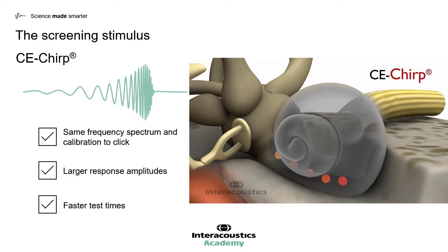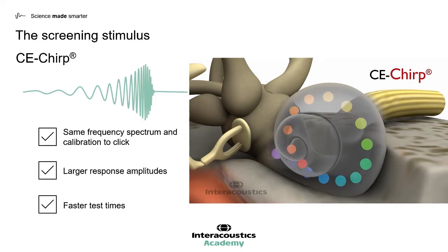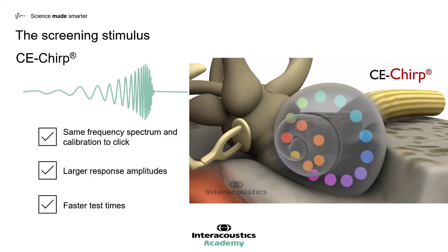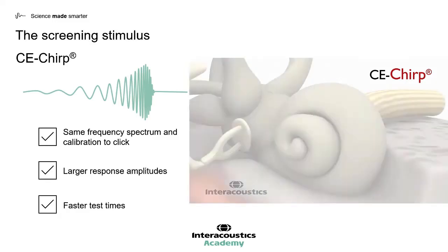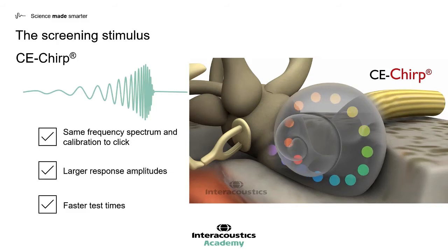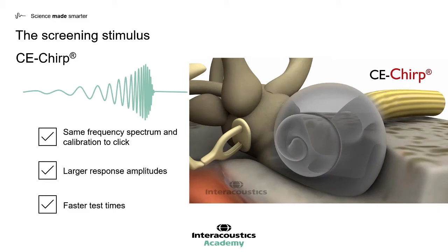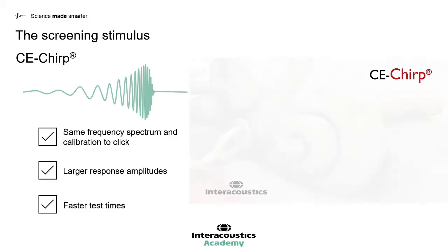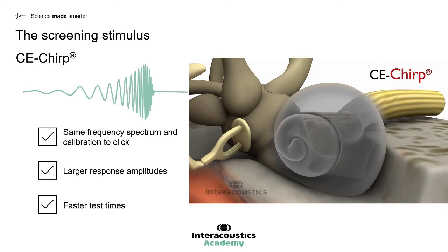The video on the right shows how it works. Instead of delivering all frequencies at the same time to the cochlea, the CE CHIRP does things differently. Firstly, it presents the low frequencies, followed by the mid frequencies, followed by the high frequencies. These then travel along the basilar membrane and reach their respective part at the same time, meaning that when they cause neural firing, this all happens simultaneously, leading to a synchronous response on the nerve, and therefore larger response amplitudes.